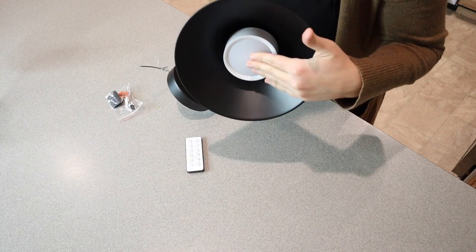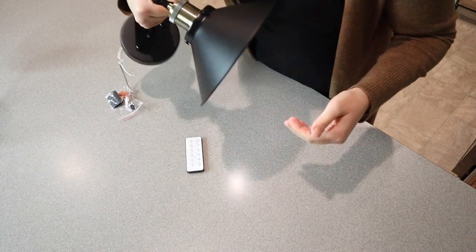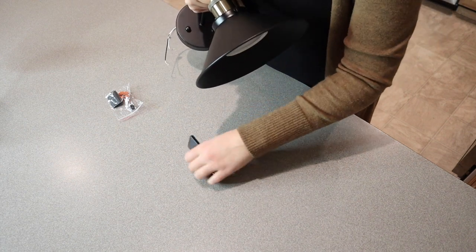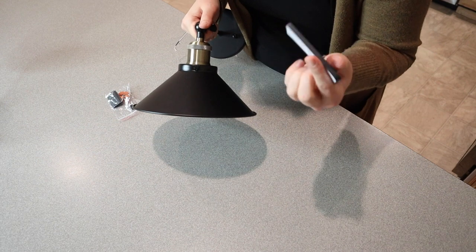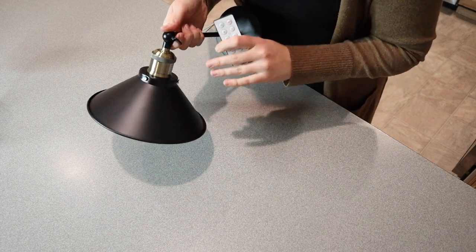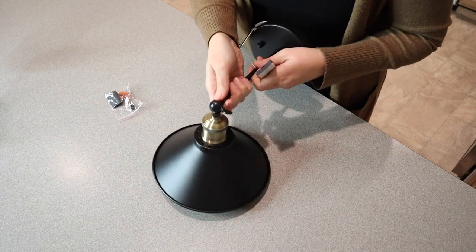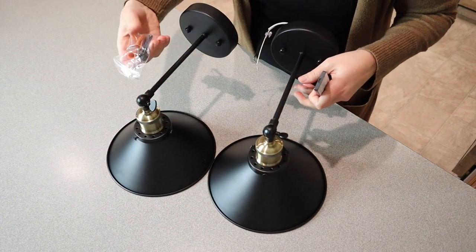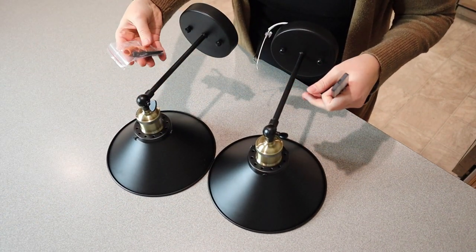You can either manually push this to turn it on and then off, or you can use this little remote control that it comes with. It does come with a remote control for both this wall sconce and the other one that it comes with. And it also comes with the hard wiring materials for both of these as well.